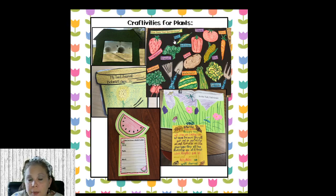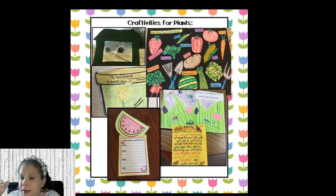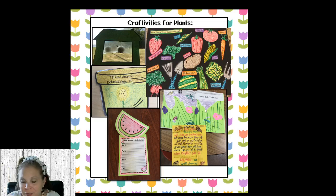Here's a cute project where kids color different vegetables and make a vegetable garden with labels. There's also a book called In the Tall, Tall Grass — they make the grass by cutting construction paper into strips, put flowers on there, add different insects in the tall grass, and write about it.